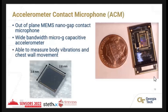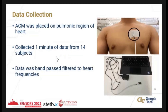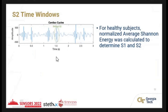Our lab at Georgia Tech has created an external contact microphone, also known as the ACM, which is an out-of-plane MEMS device. It contains a wideband MEMS capacitive microphone accelerometer. Because we're capturing micro-g accelerations, we can actually measure body vibrations — such as heart sounds and chest wall movement — allowing us to know when the patient is inhaling or exhaling. The ACM was placed on the sternal region on 14 subjects: 10 healthy subjects with varying BMI and 4 subjects with known heart disease such as aortic stenosis. After collecting data, we bandpass filtered it to the major heart frequency range of 60 to 200 Hz.